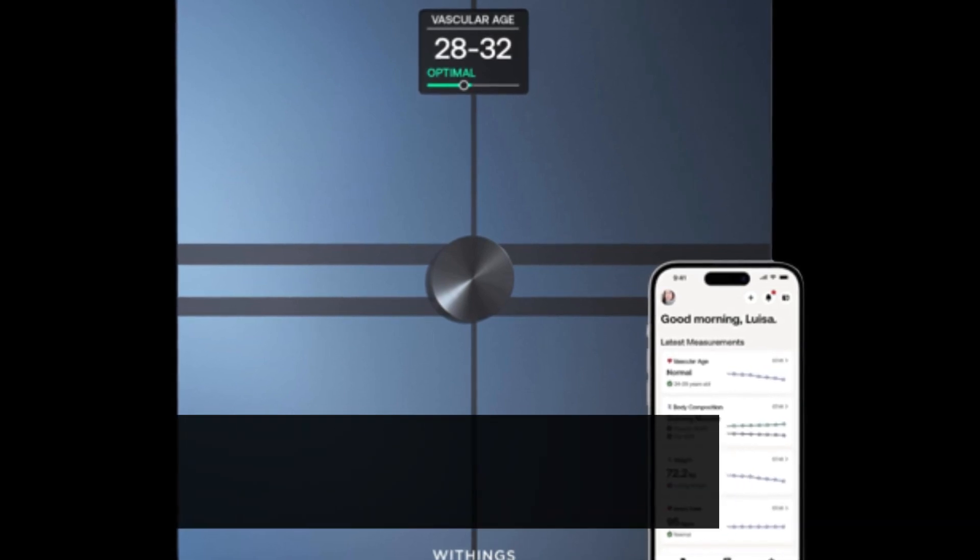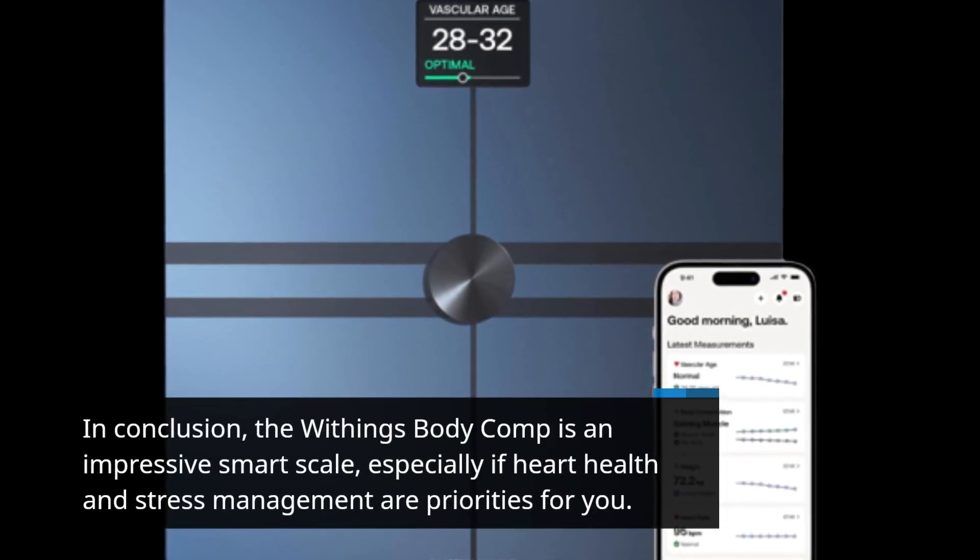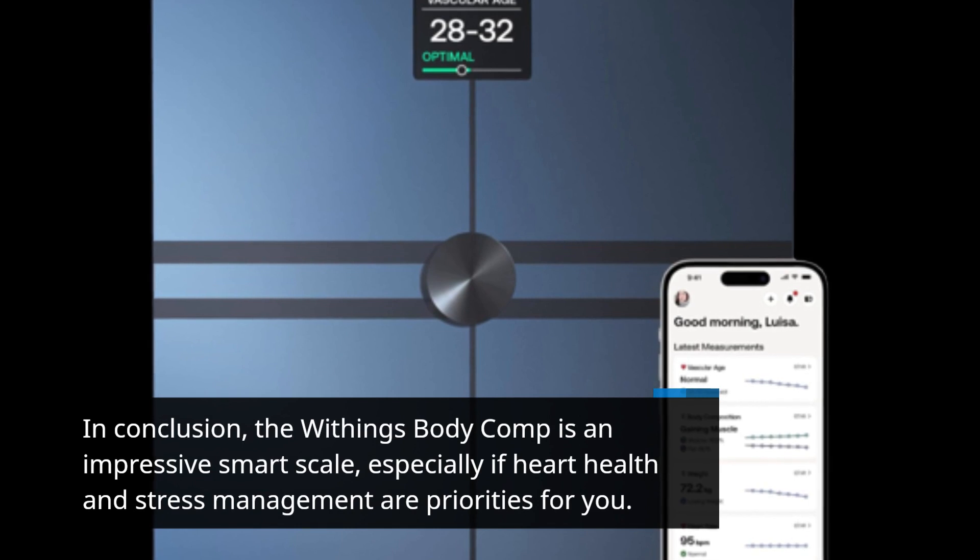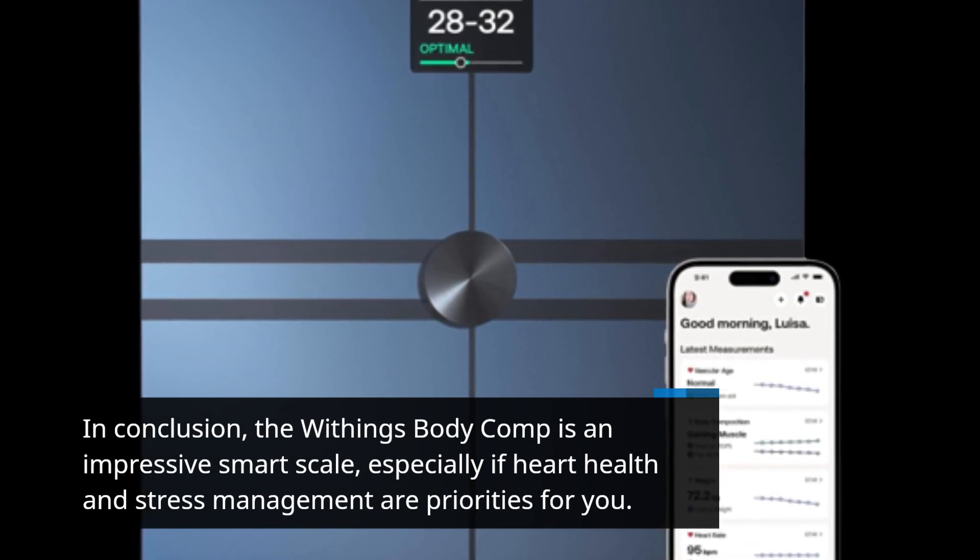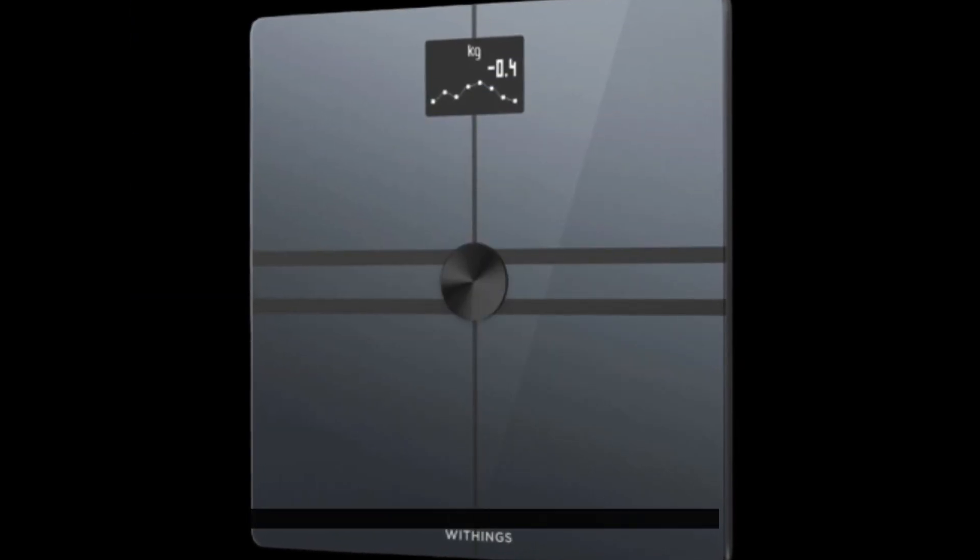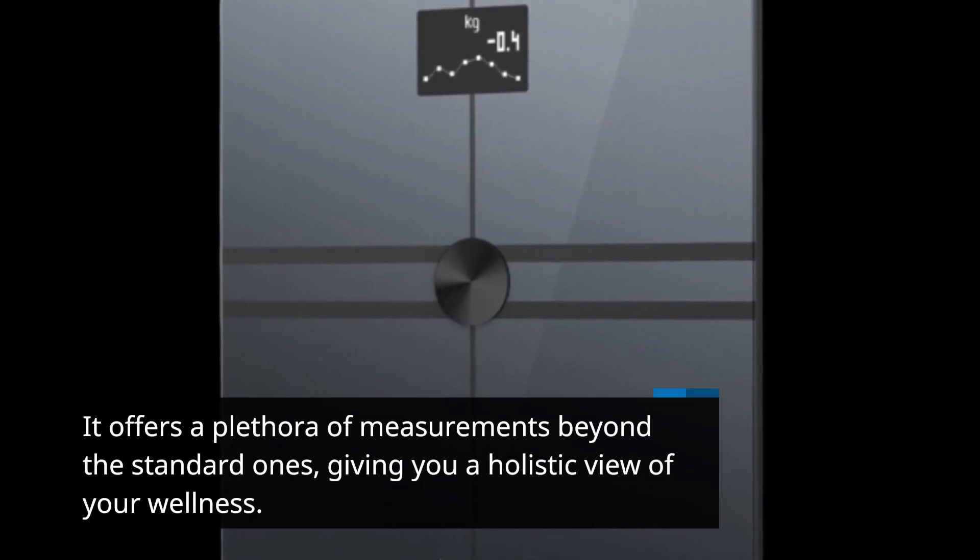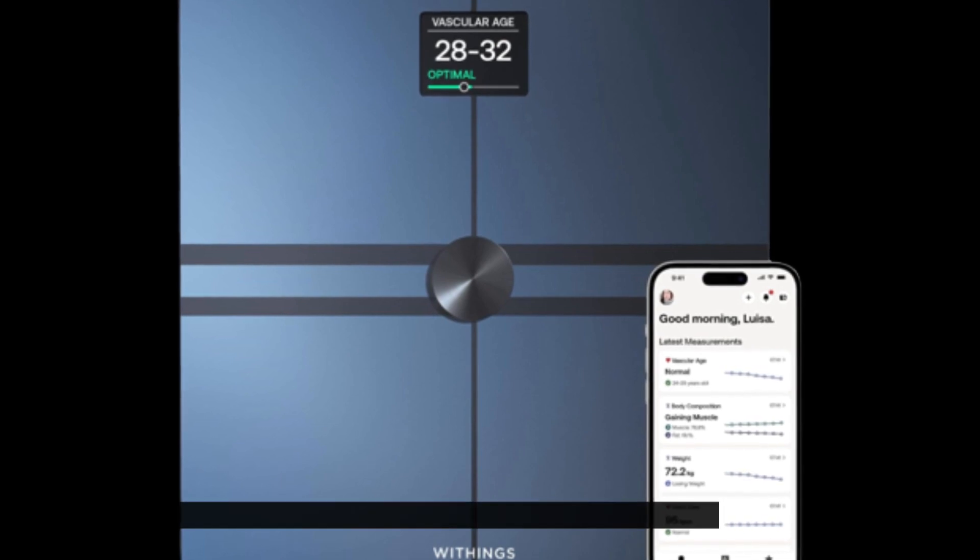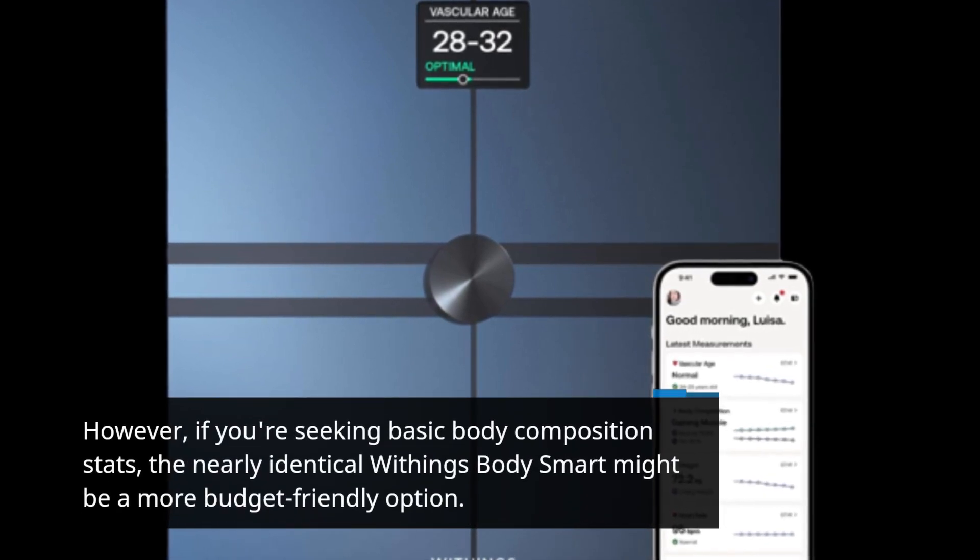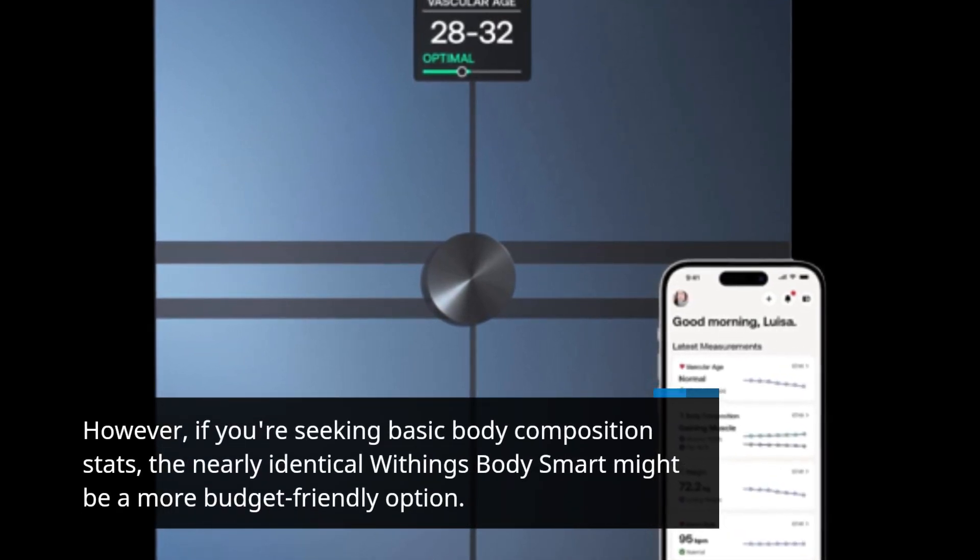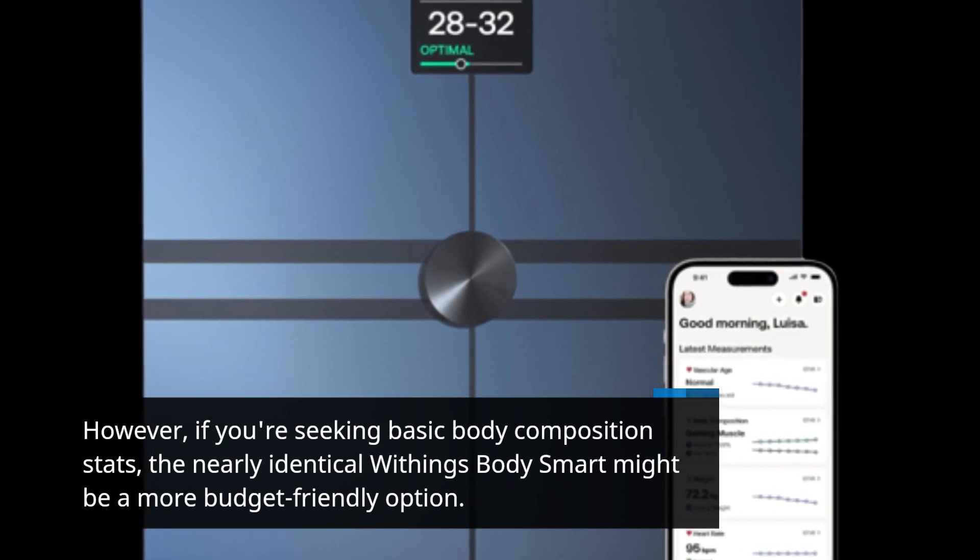In conclusion, the Withings Body Comp is an impressive smart scale, especially if heart health and stress management are priorities for you. It offers a plethora of measurements beyond the standard ones, giving you a holistic view of your wellness. However, if you're seeking basic body composition stats, the nearly identical Withings Body Smart might be a more budget-friendly option.